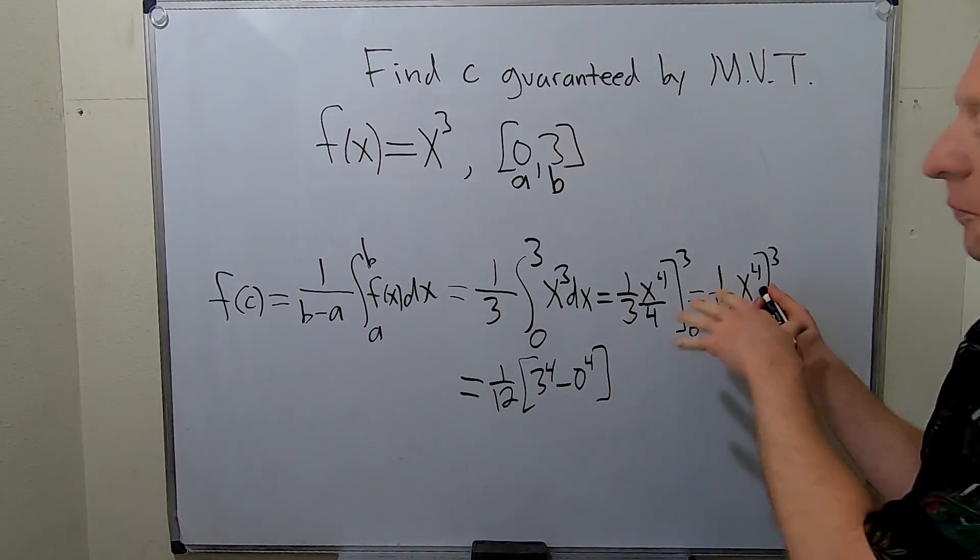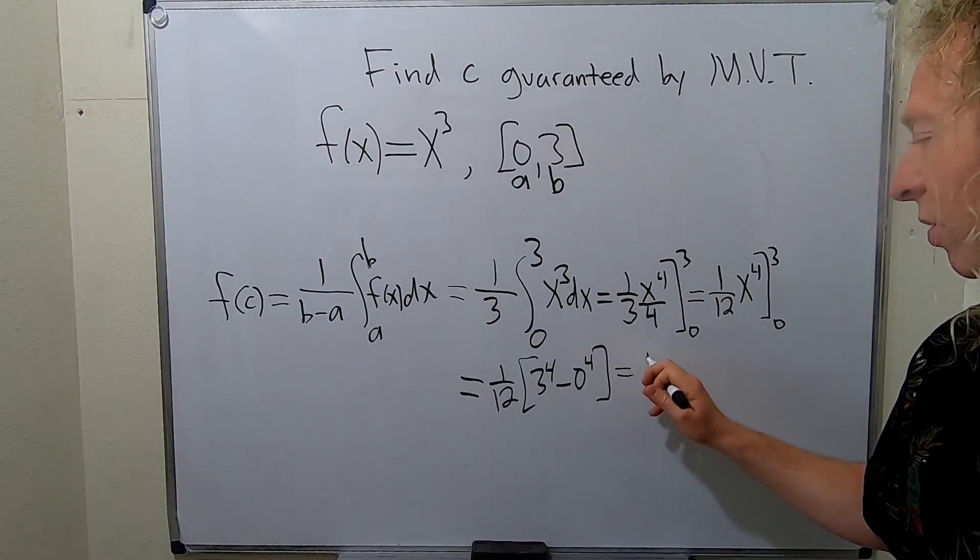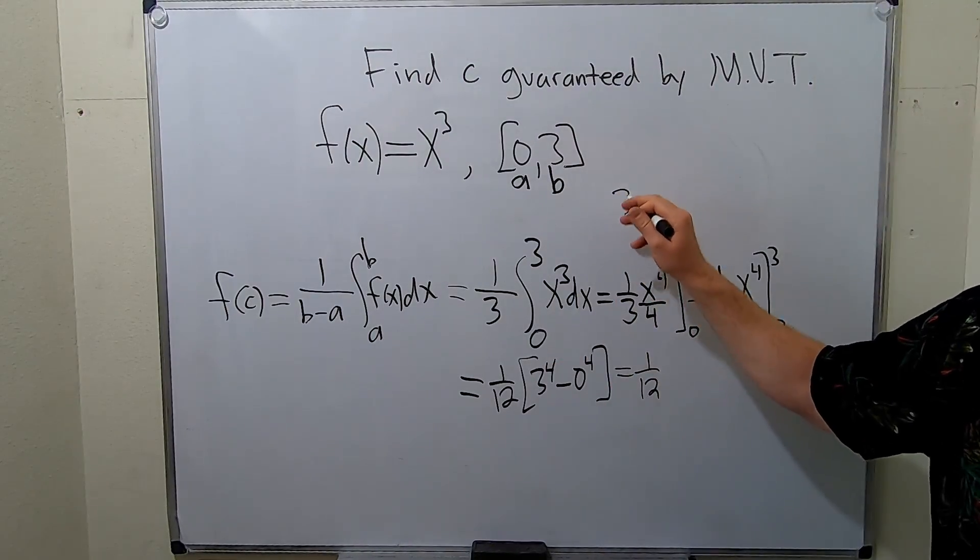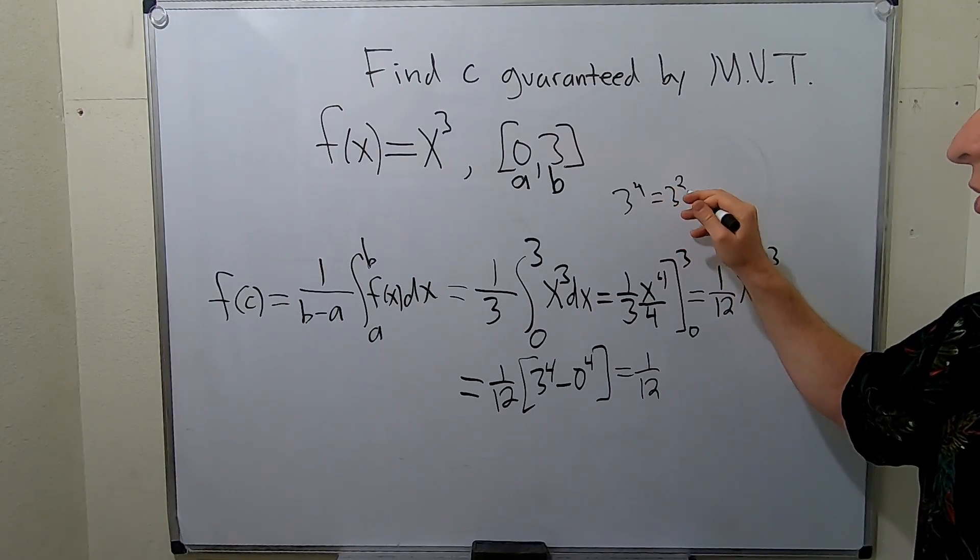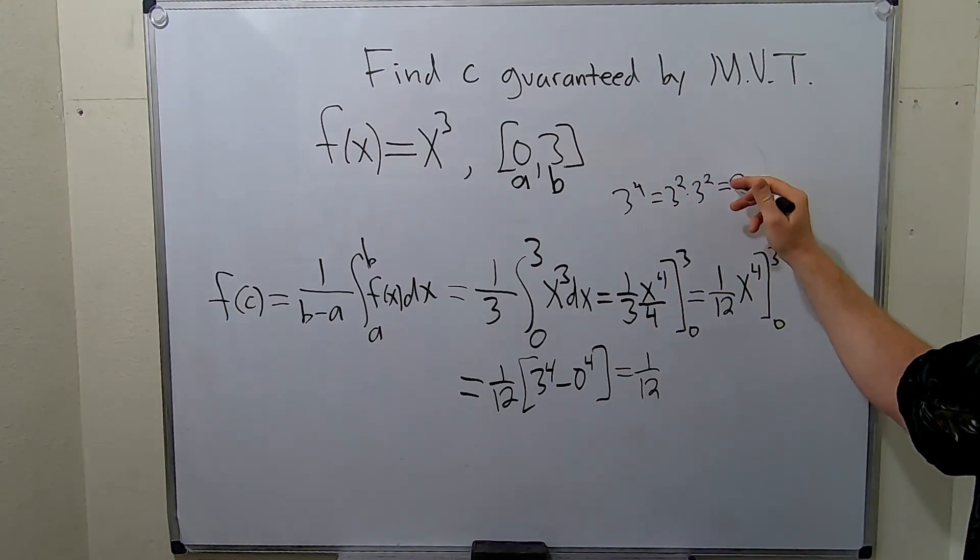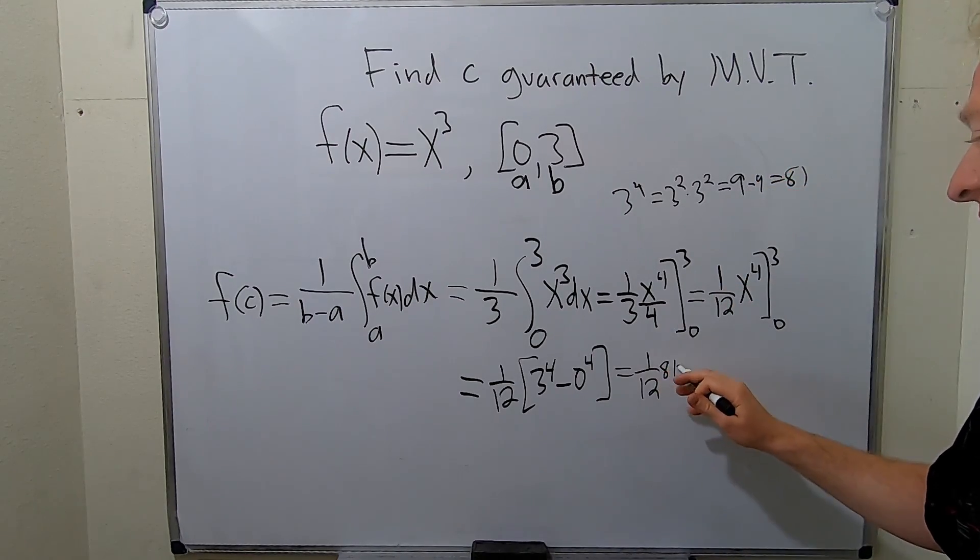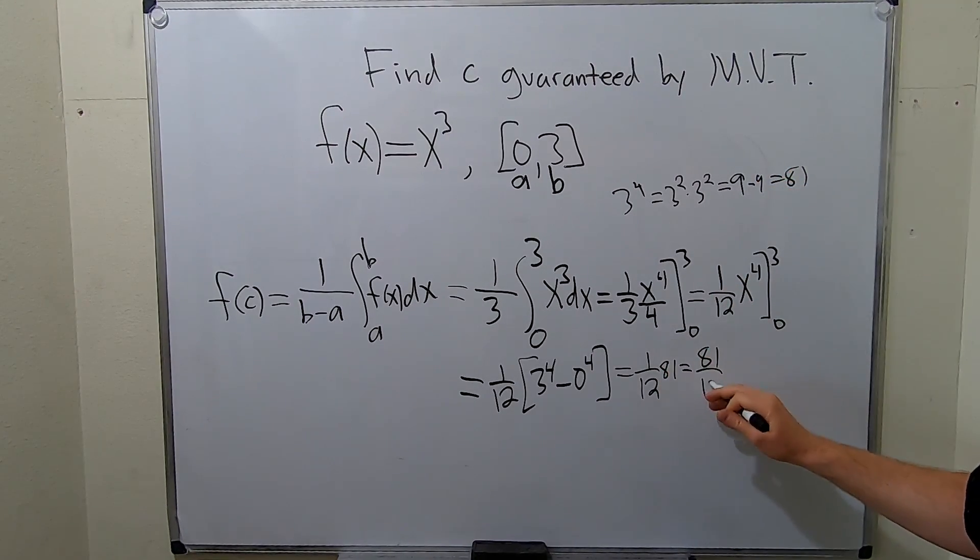So 3 to the 4th, I got to think about this. This is 1 over 12. 3 to the 4th is 3 squared times 3 squared. It's 9 times 9, which is 81. So this is 81, so 81 over 12.